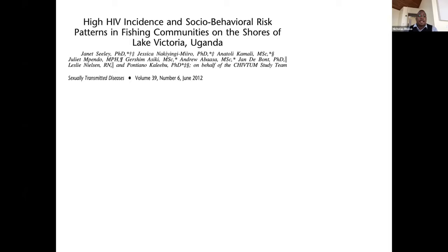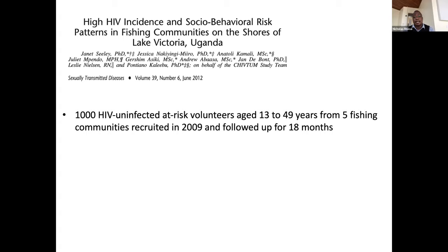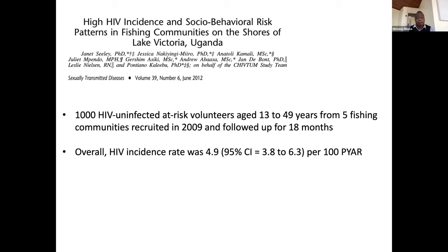Another study was done by Janet Sealy. In this study, 1,000 HIV-uninfected at-risk volunteers aged between 13 to 49 years from five fishing communities were recruited in 2009 and followed up for 18 months. Overall, the HIV incidence rate was estimated at about 4.9 per 100 person-years at risk. The highest incidence rates were noted among people who worked in boats, those aged between 13 to 24 years, and new immigrants — people who had just migrated into the fishing communities.